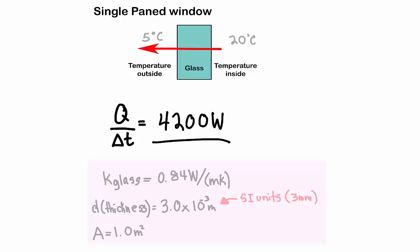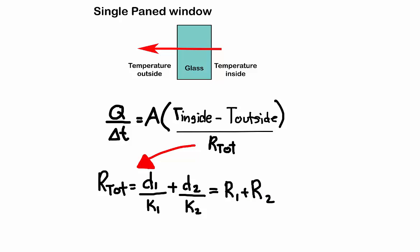Now if you wanted to, you could solve this in terms of R-value and resistance using this equation. So the total resistance would be the thickness of the glass, D, over the thermal conductivity of the glass, K, because there is only one layer.